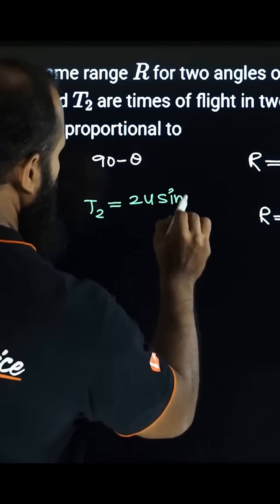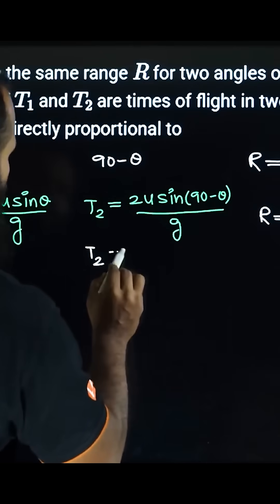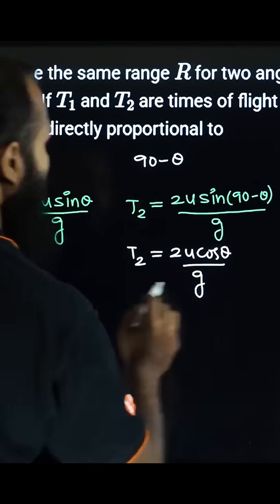For the complementary angle, you have sin(90 - θ) which equals cos θ. So T₂ equals 2u cos θ over g. We will then multiply these.